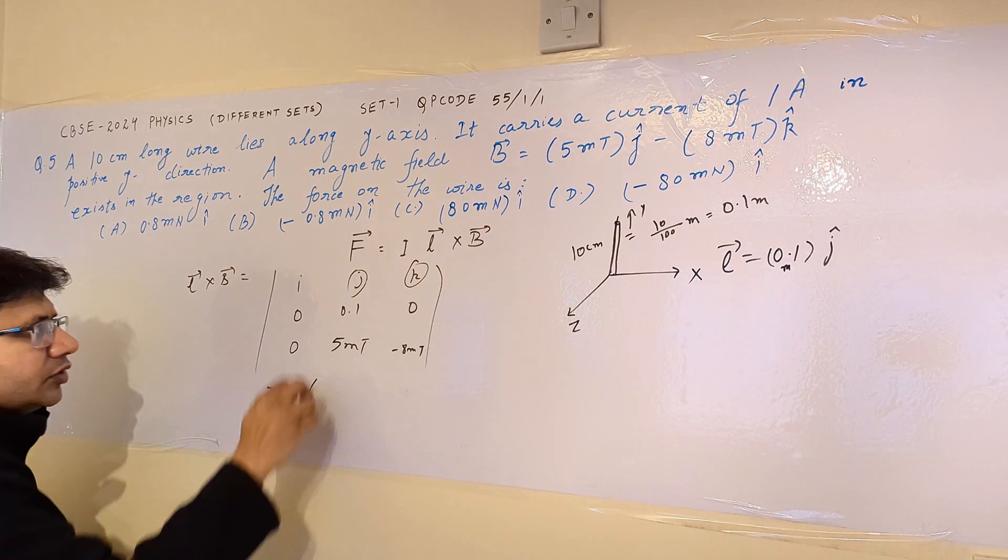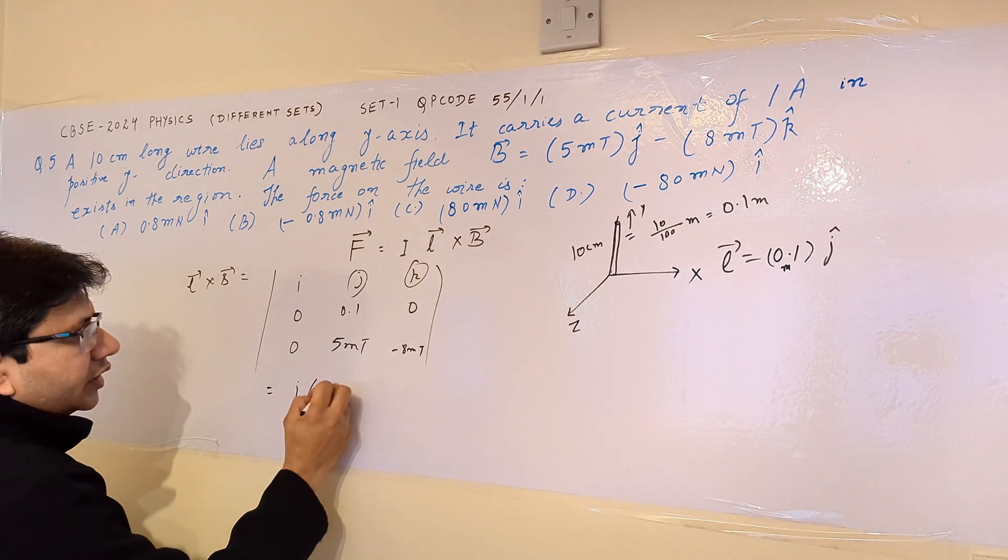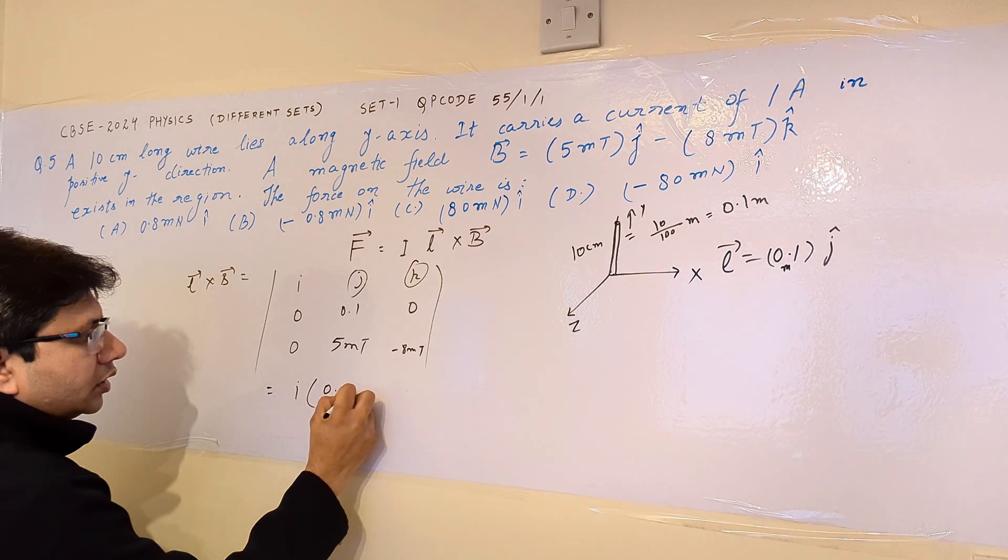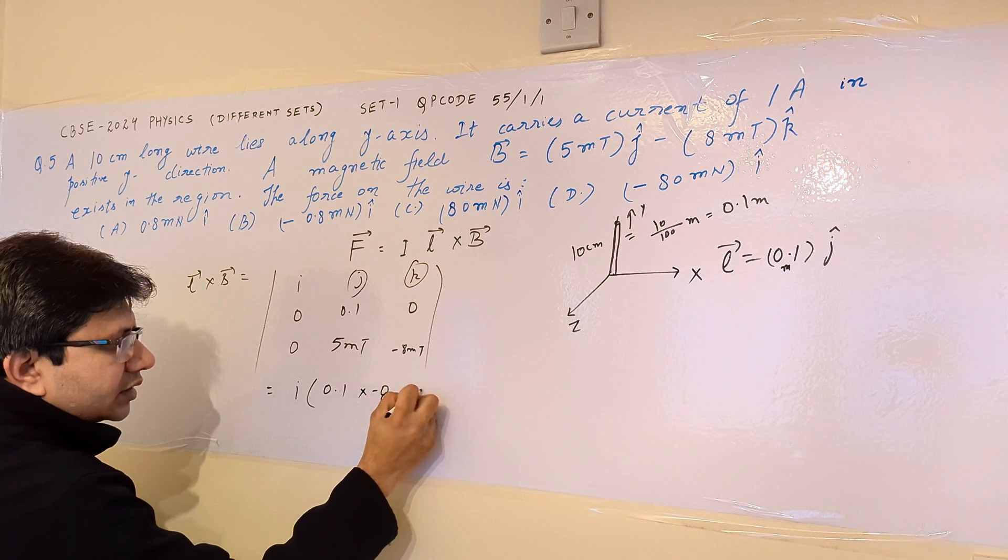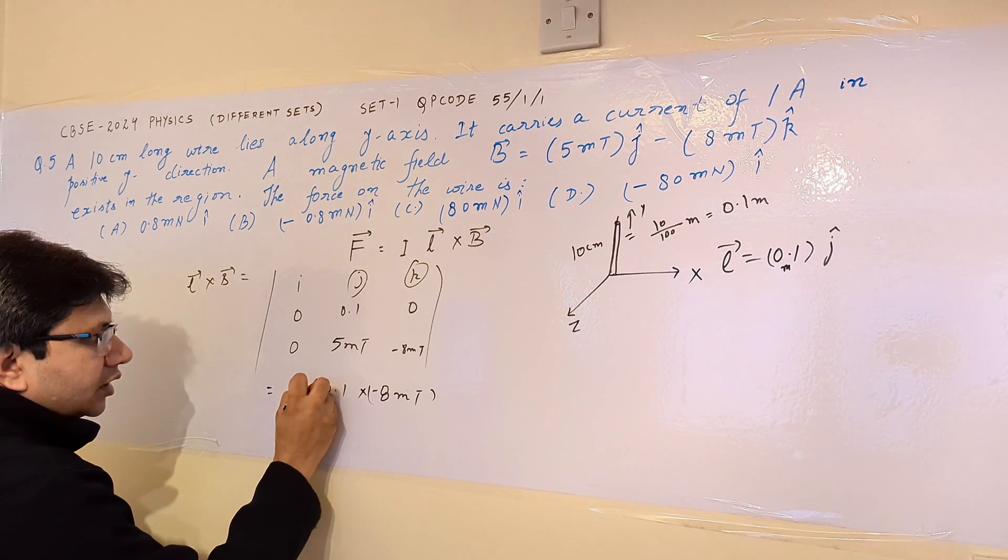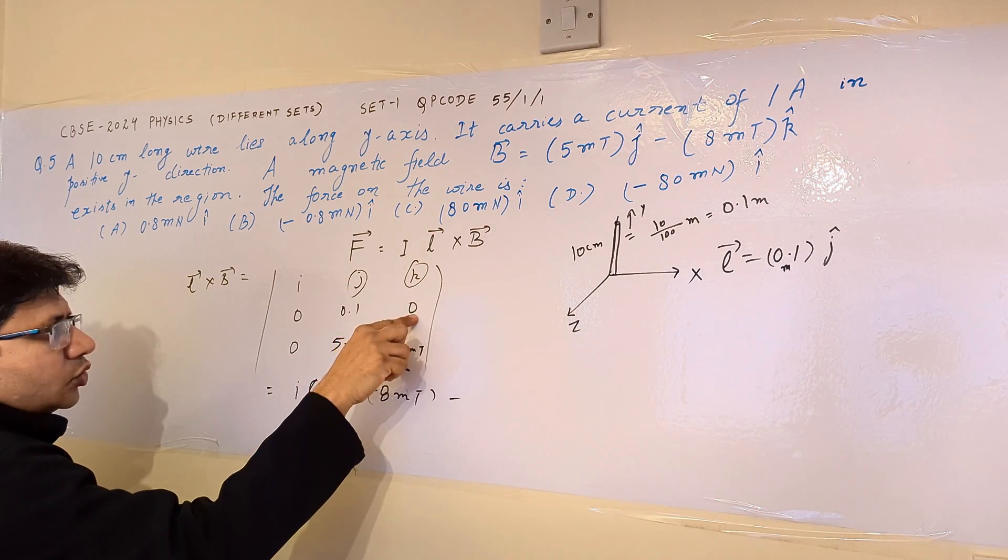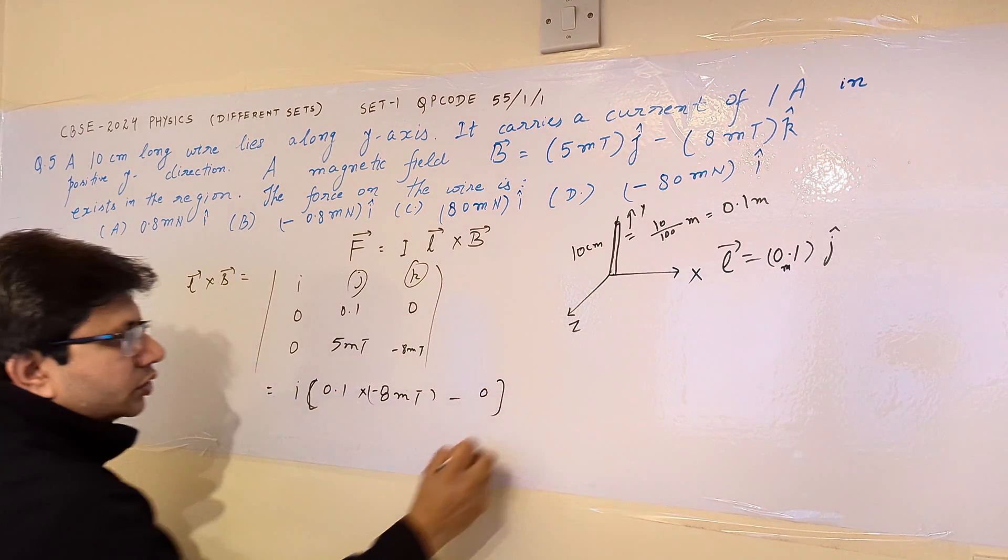So the only component which remains is corresponding to I. So for I, then we have to write it down as I in bracket, we have 0.1 multiplied by minus 8 millitesla, and then minus 0 multiplied by 5 millitesla, which is equal to 0.